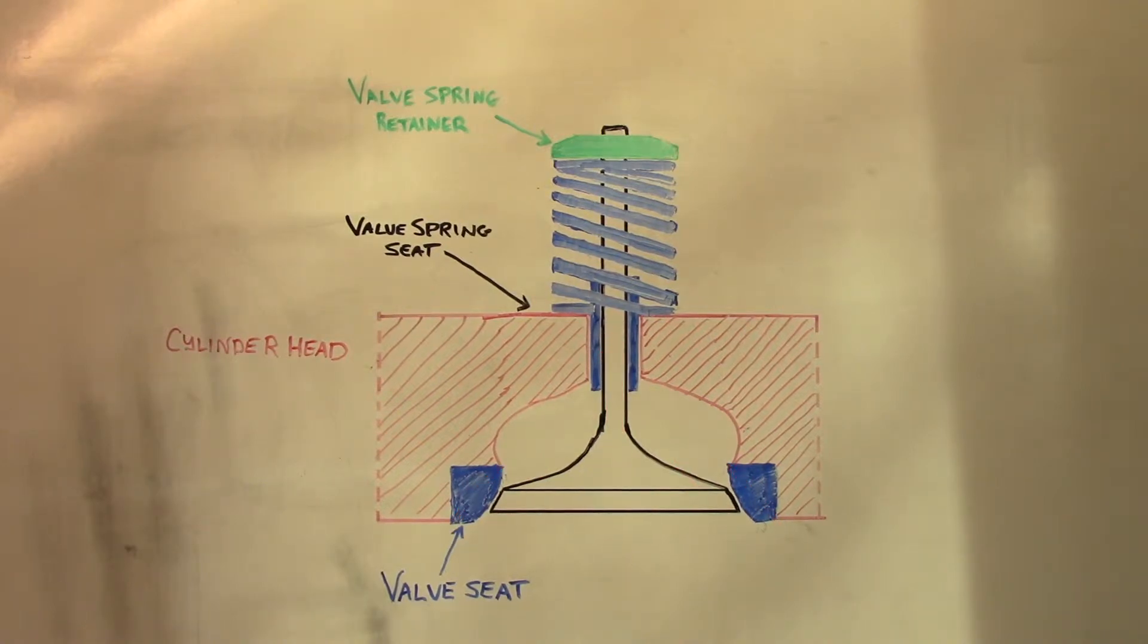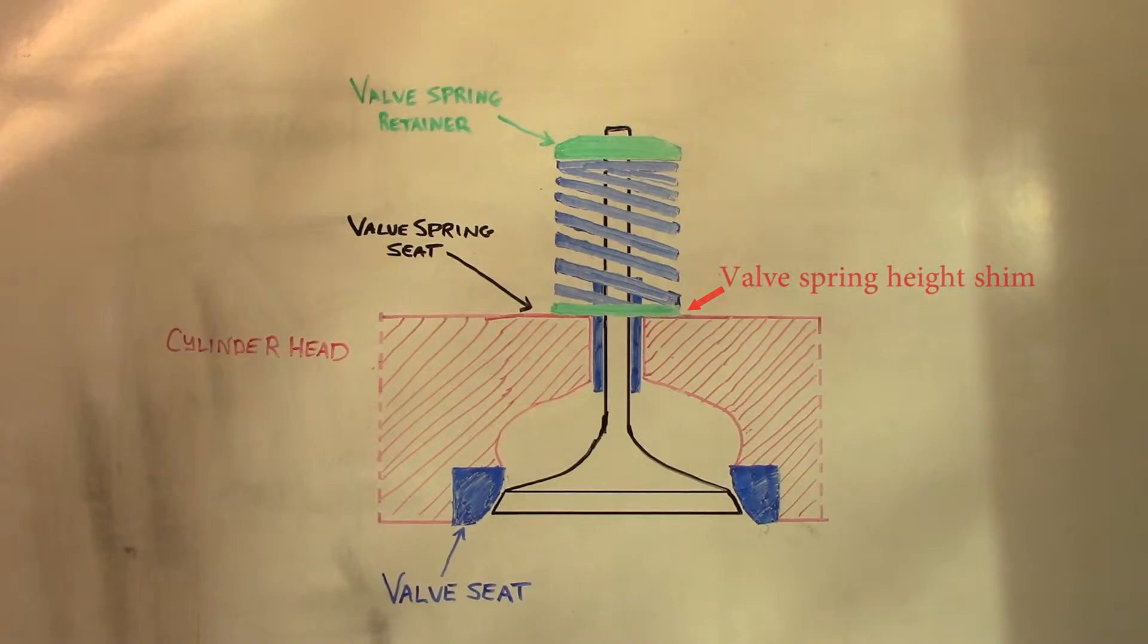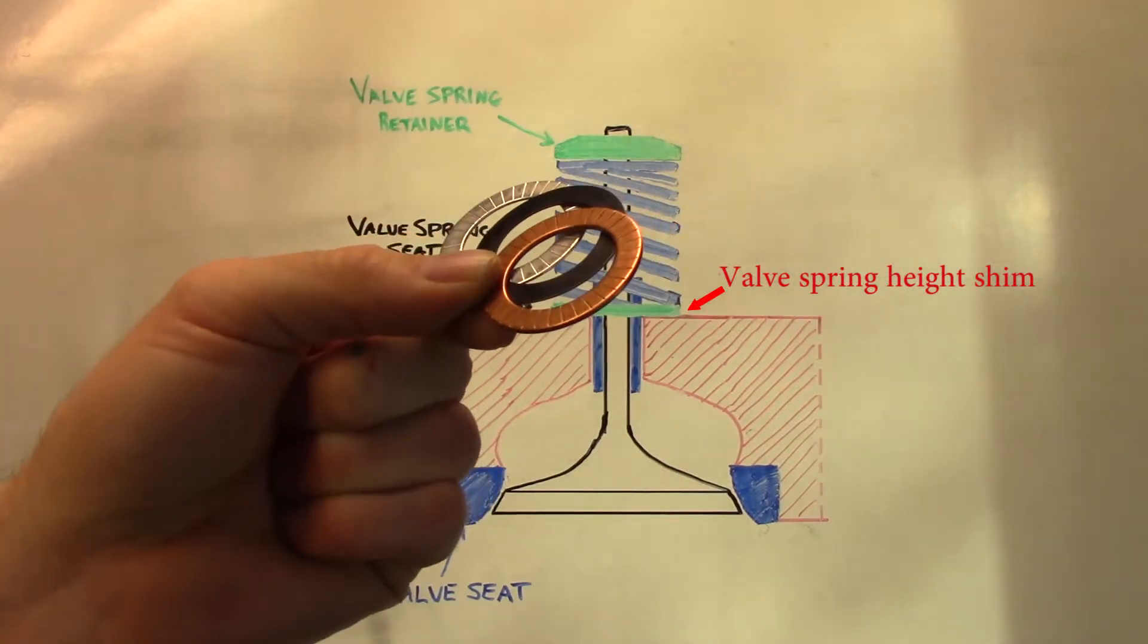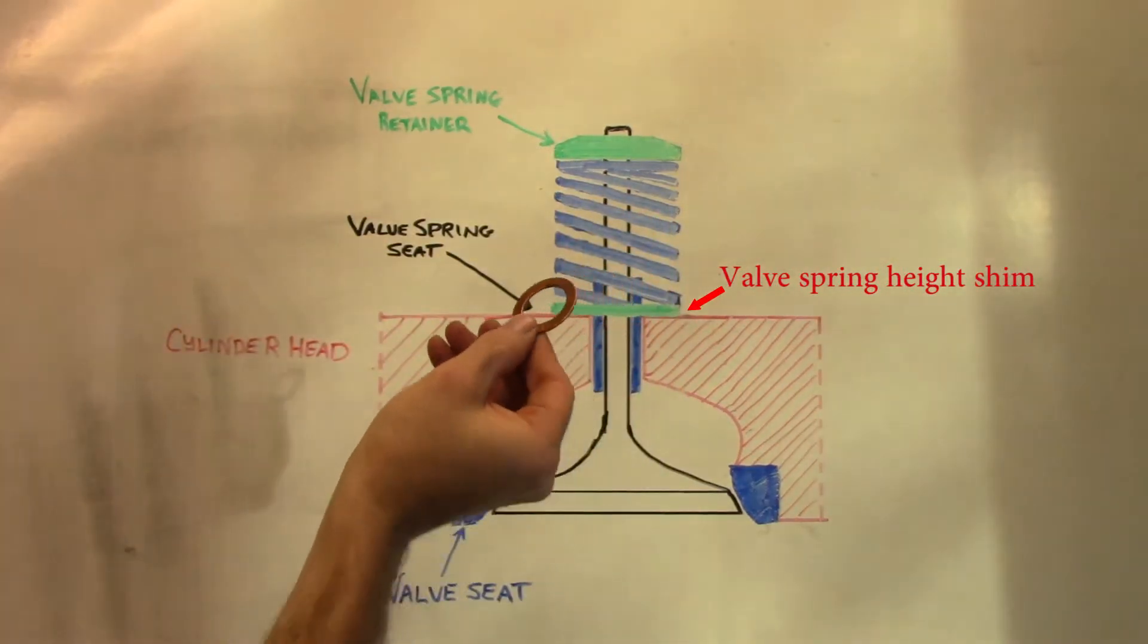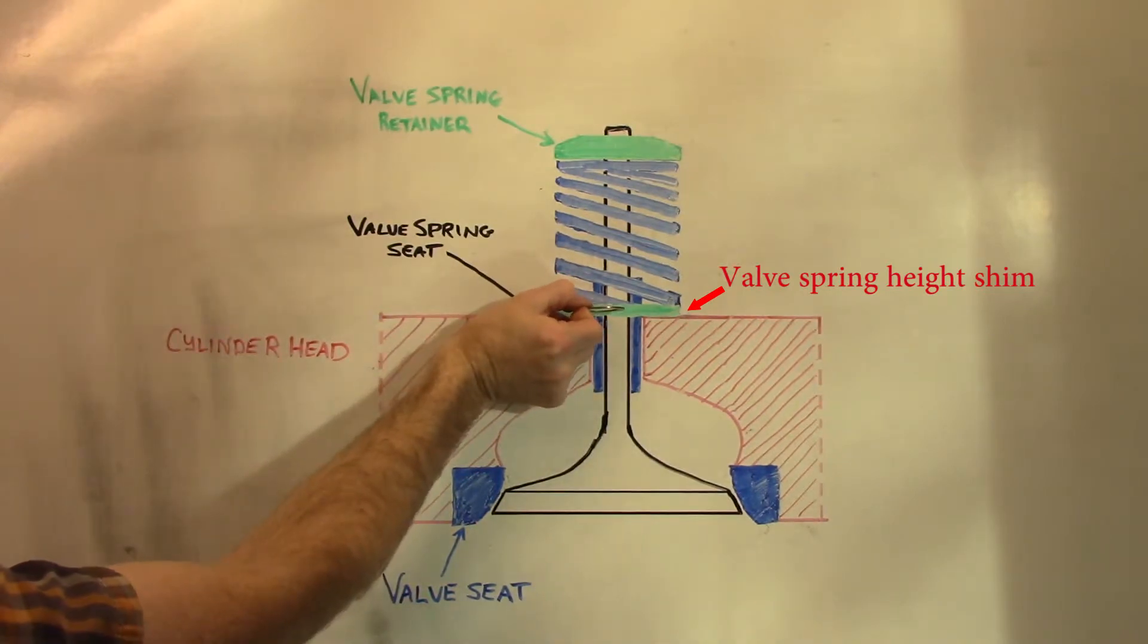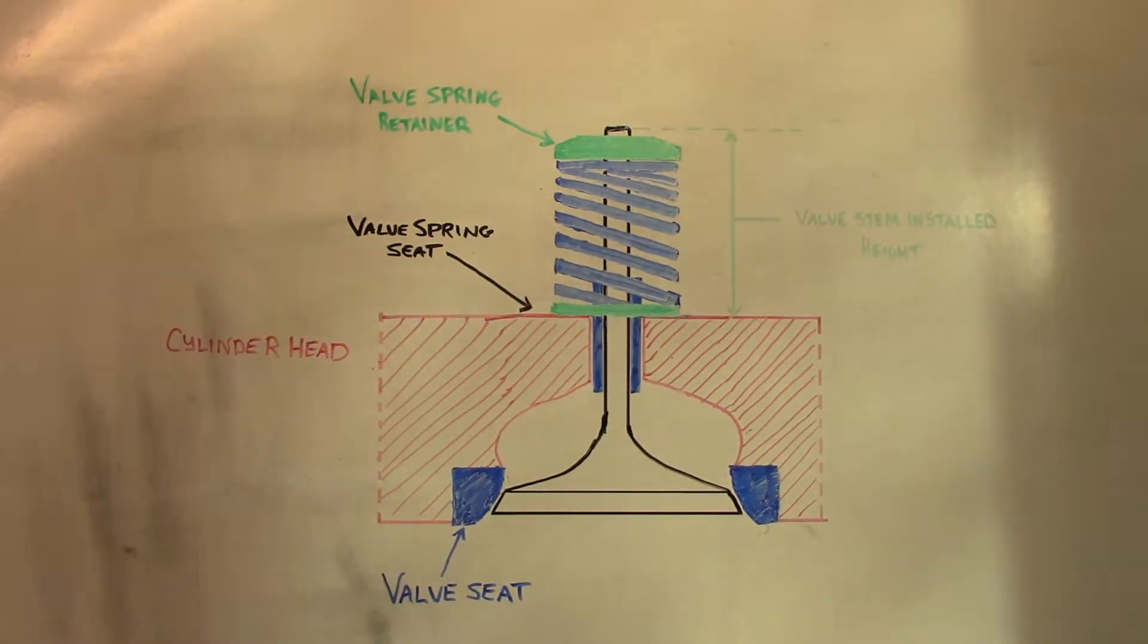Valve spring installed height can be corrected using special valve spring height shims, but only if the valve doesn't fail the valve stem installed height test, indicating that there is excessive wear on the valve seat or the valve face which must be corrected first.